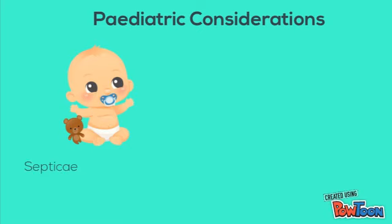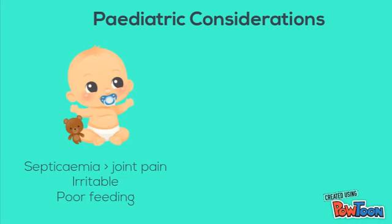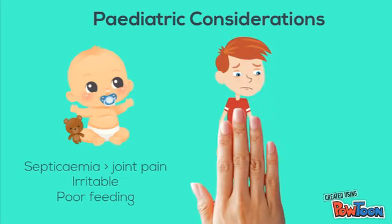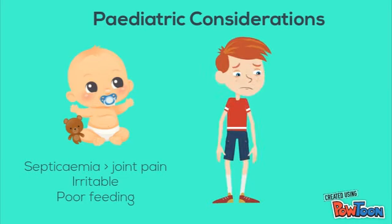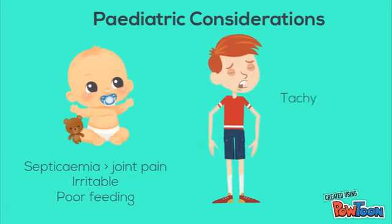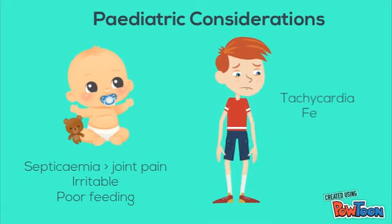In neonates, there is an emphasis on septicemia over joint pain — the baby is irritable and refuses to feed. It is important to not miss concomitant osteomyelitis in an adjacent bone end. In both neonates and children, check for tachycardia and fever.